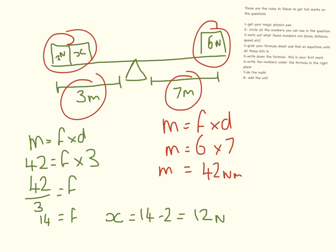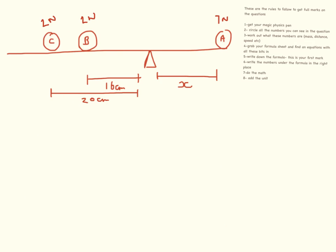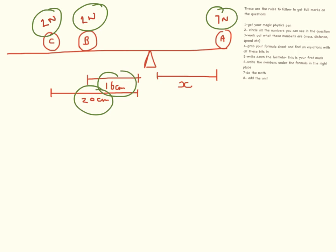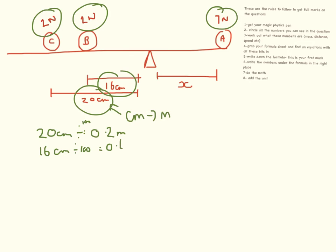This could appear near the end of a higher paper. Things are getting trickier now — on one side we have two things going on. Those paying close attention will notice these are non-standard units, so the first thing we must do is convert centimetres into metres. 20 centimetres divided by 100 equals 0.2 metres. 16 centimetres divided by 100 equals 0.16 metres.